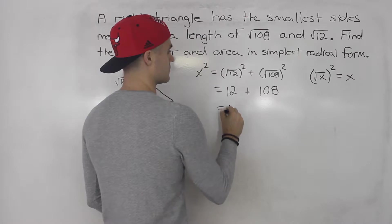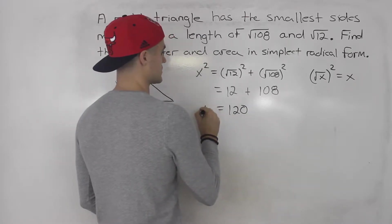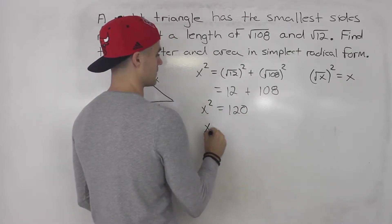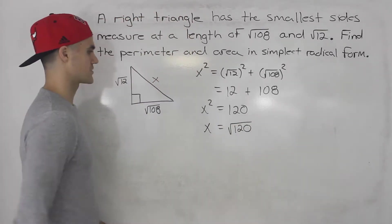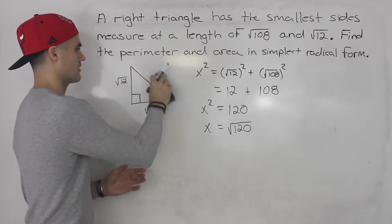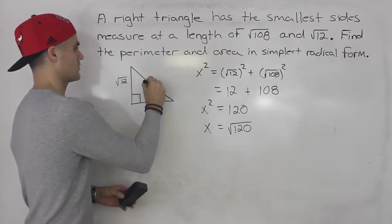So adding these two, we end up with 120. So x squared is 120, which means x is root 120. So let's label that length here for the hypotenuse. So we got root 120.